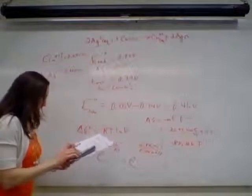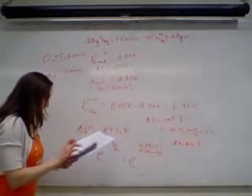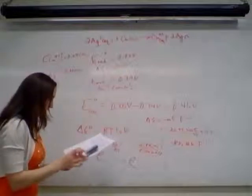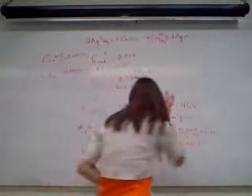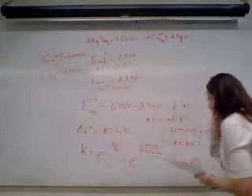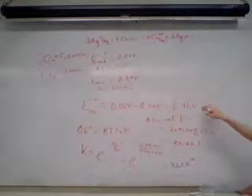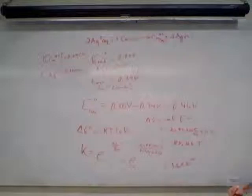So we have this number divided by 8.314, divided by 298, so that's 35.8, and then that's what we raise e to, and that gives me 3.6 times 10 to the 15. So it's a very large equilibrium constant, which is what we'd expect if we have a spontaneous reaction, and we'd end up forming a lot of product. It's pretty much a complete reaction with a very large constant.